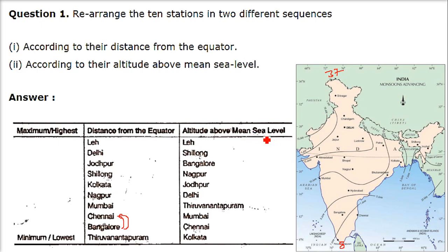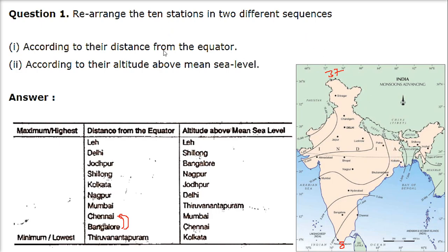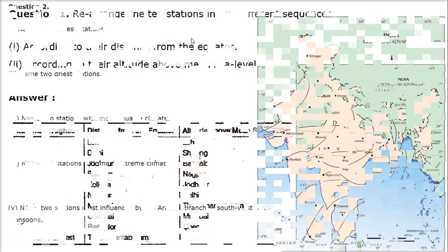Altitude above sea level — highest and lowest. So Leh is the highest, then comes Shillong, then we have Bangalore, then comes Nagpur, then Jodhpur, then Delhi, then comes Thiruvananthapuram (Trivandrum), and then Mumbai, then Chennai, and finally Kolkata.